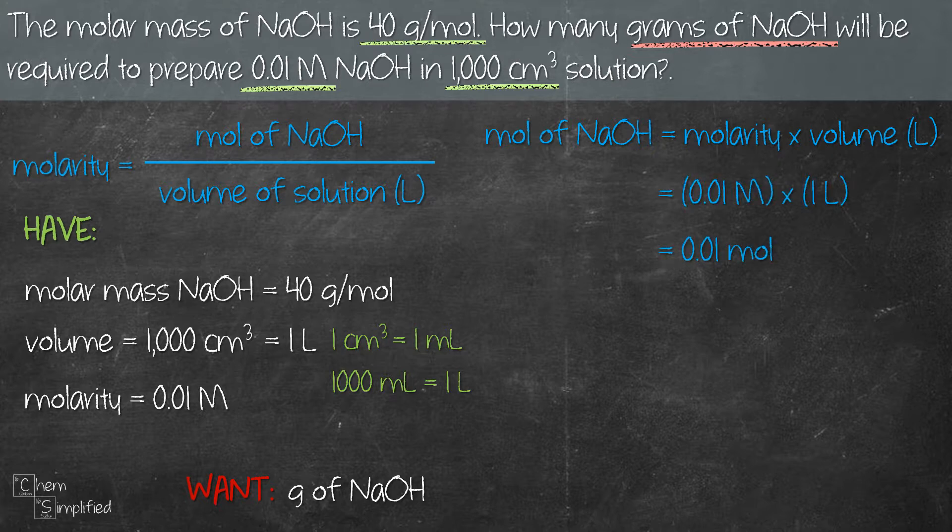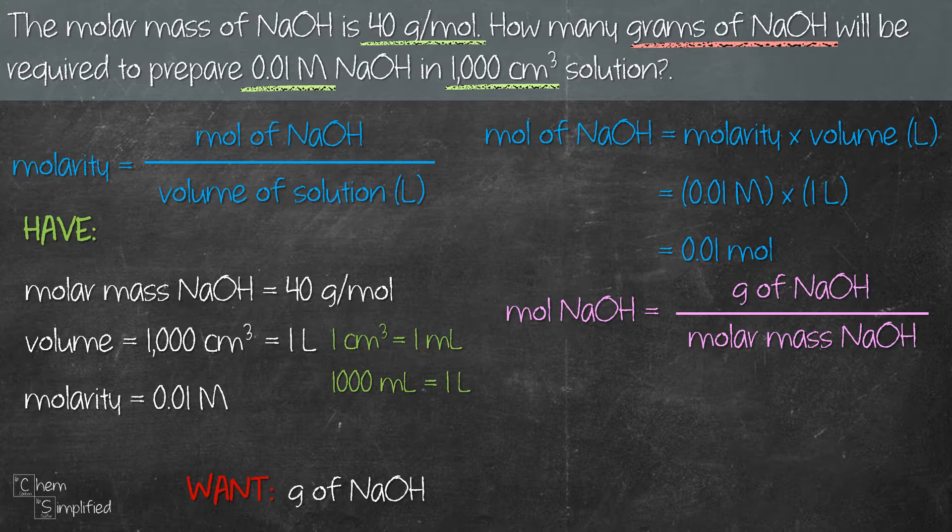Now that we found the mole, what we need to do is use that to find the grams of NaOH, and we can do that using molar mass. So we're going to rearrange it and that will give us grams of NaOH.